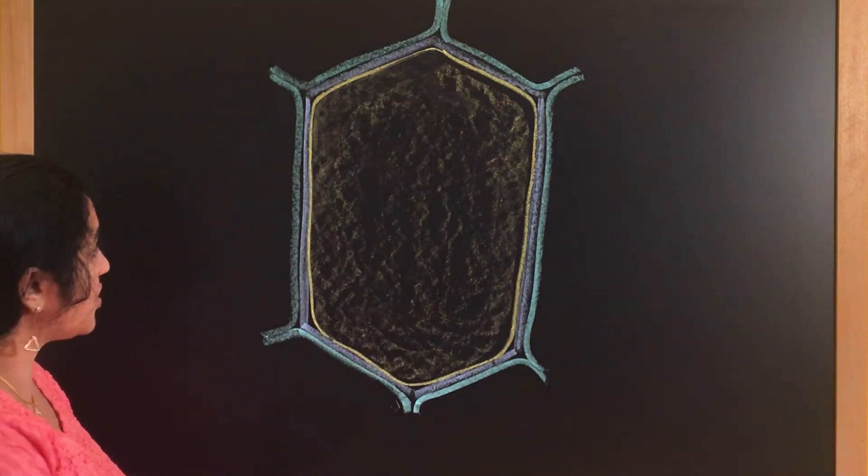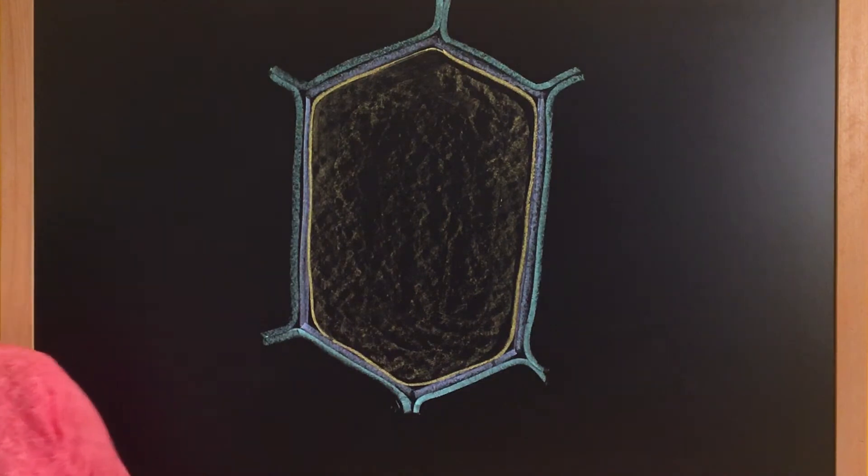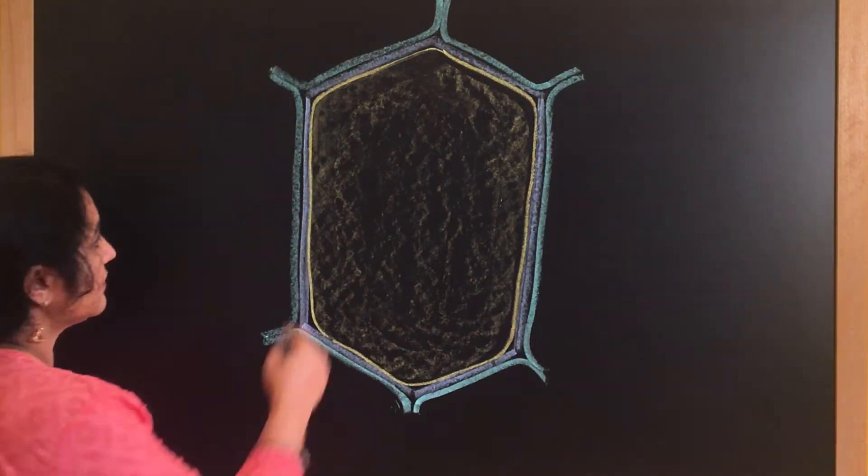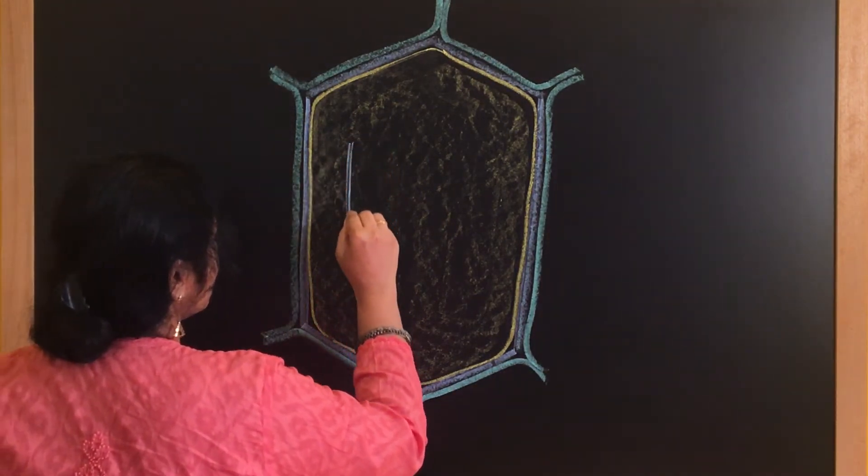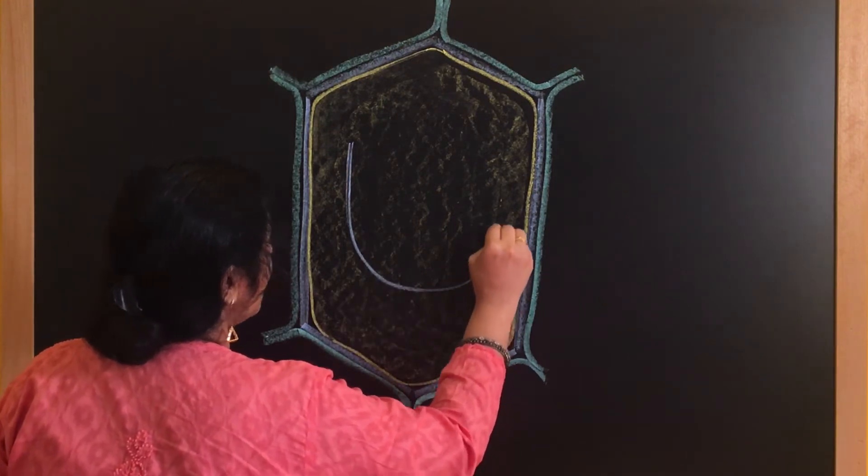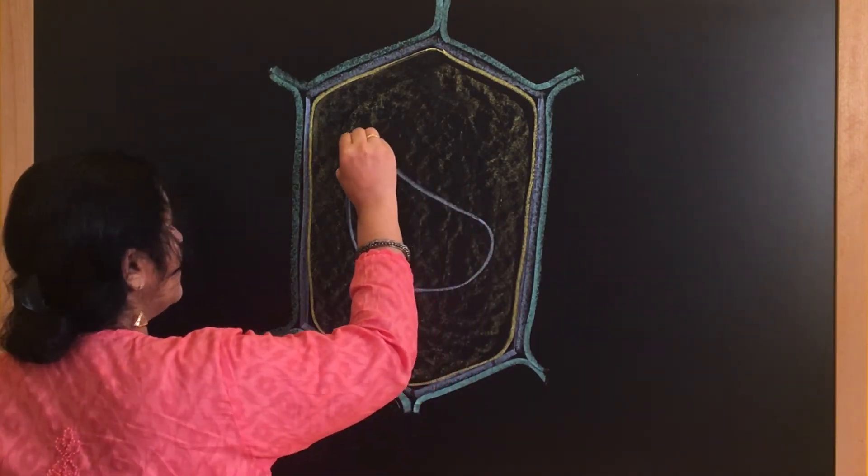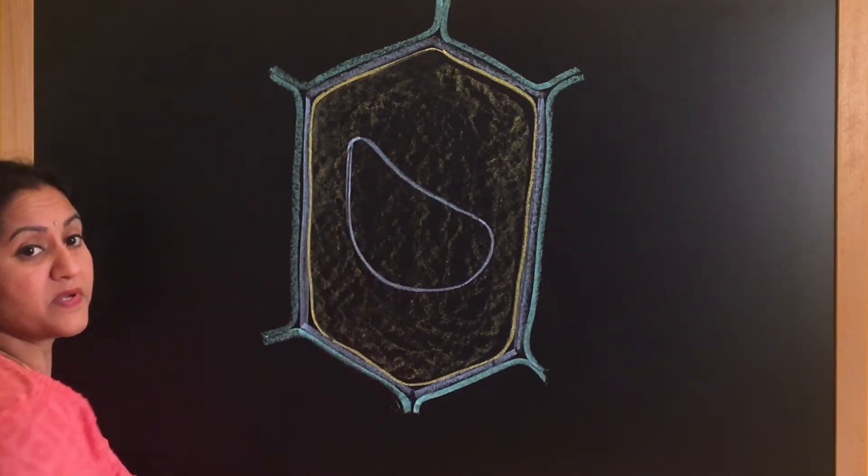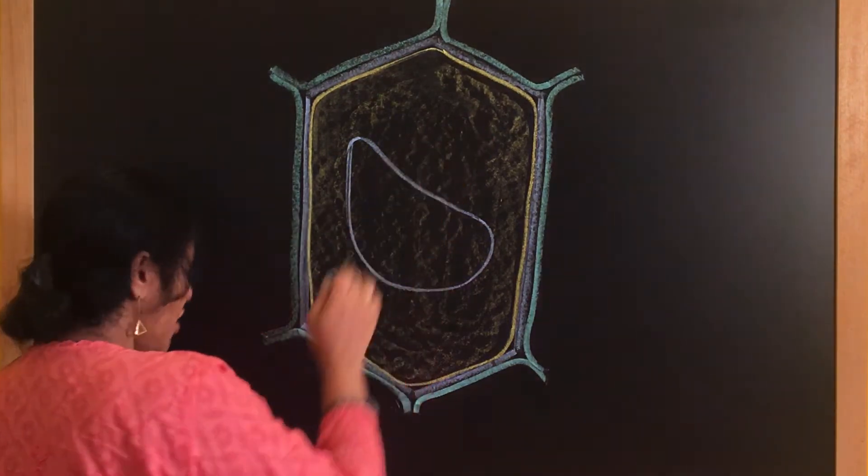So what happens is the vacuole will be pushing the nucleus towards one of the corners. So let us draw the vacuole here in the center. It is a large vacuole that I am drawing here right in the center. So because of the presence of this vacuole, the nucleus is being pushed.